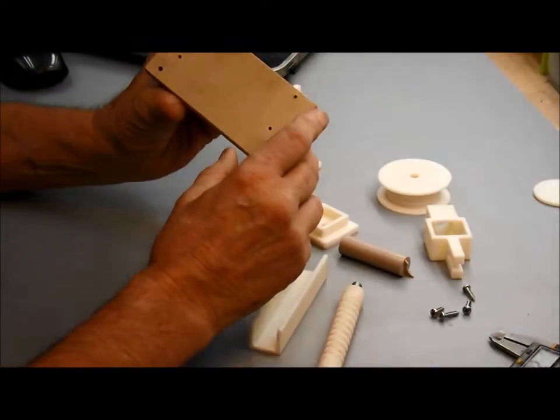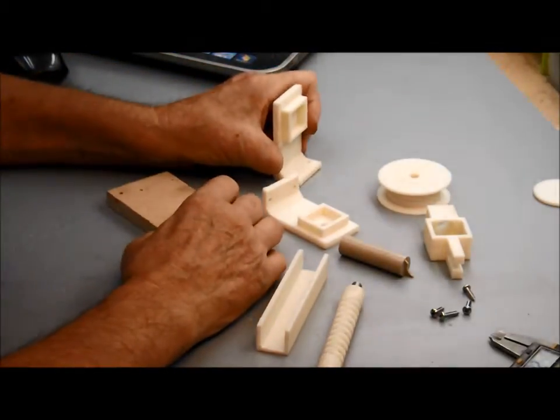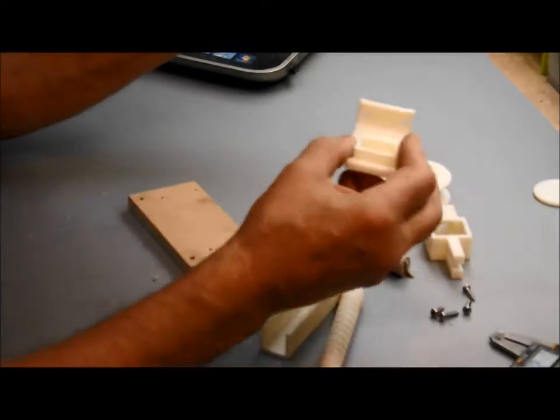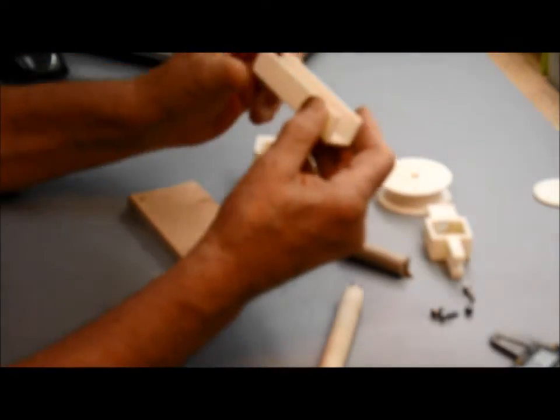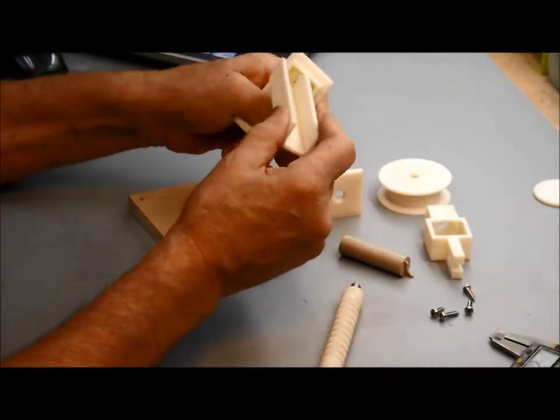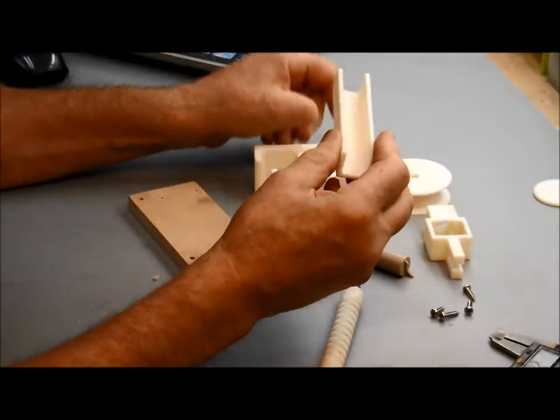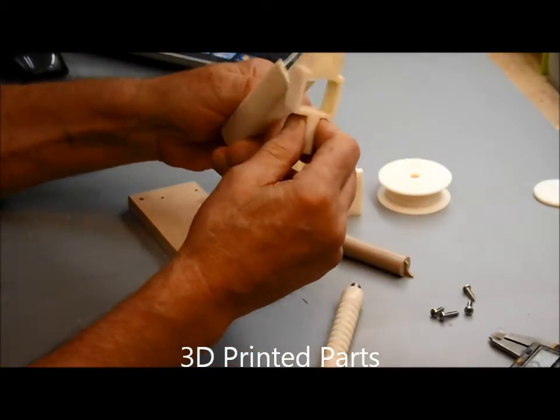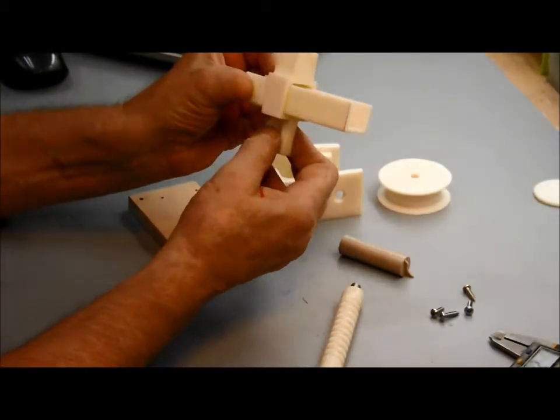We have a mounting block two and a half by five inches, the mounting brackets - there's two of them, they're identical - we have a channel guide that fits in the mounting brackets, and this is the filament guide that guides the filament in this slot here.